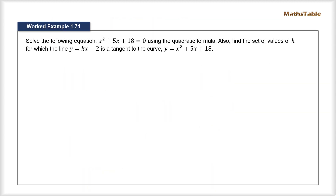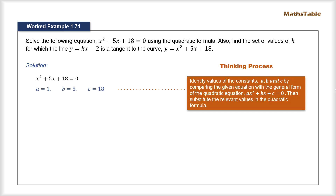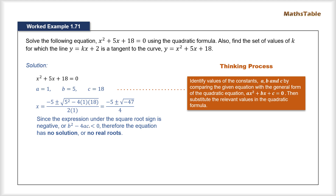Now let's take an example. We need to solve the quadratic equation x² plus 5x plus 18 equal to 0 using the quadratic formula. Identifying the constants: a equals 1, b equals 5, and c equals 18. Substituting into the quadratic formula, we find that the discriminant is negative, corresponding to case 3 where b² minus 4ac is less than zero. Since we cannot evaluate a negative square root, this equation has no real roots.